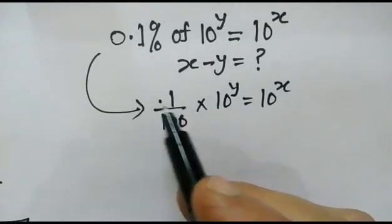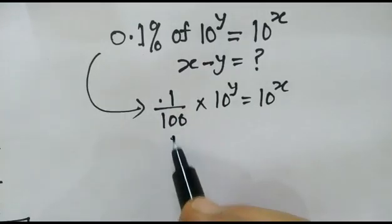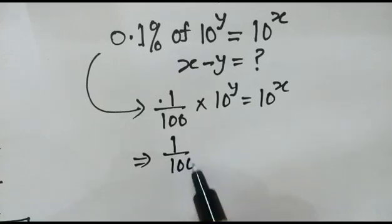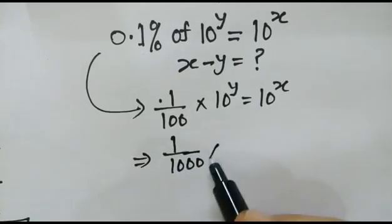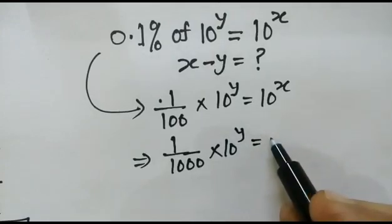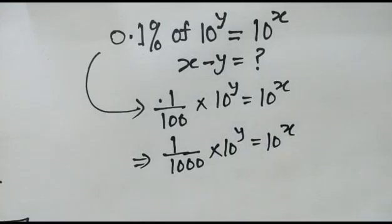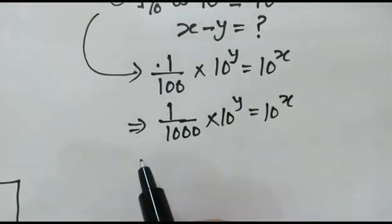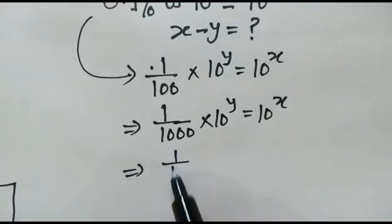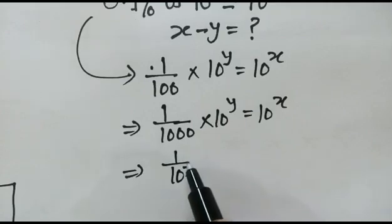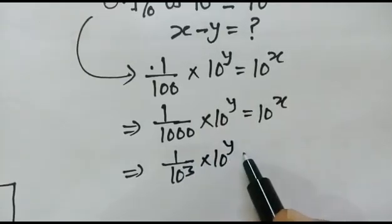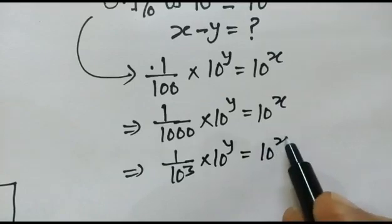Now if we remove the decimal point, we can write 1 over 1000 into 10 to the power y is equal to 10 to the power x. Now 1 over 1000 can be written as 10 to the power 3, into 10 to the power y is equal to 10 to the power x.